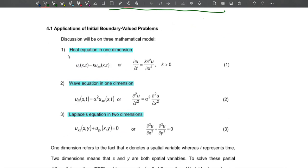The first one would be the heat equation, which is in one dimension: u_t(x,t) equals k times u_xx(x,t), or del u over del t equals k times del squared u over del x squared, where k must be greater than zero. It should be positive.